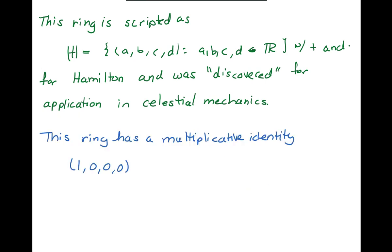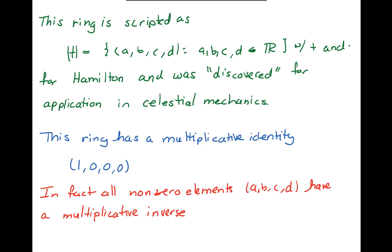This ring is very nice. It has a multiplicative identity, (1, 0, 0, 0) turns out to be the multiplicative identity. And in fact, all the non-zero elements have a multiplicative inverse. So it's as nice as it can be.